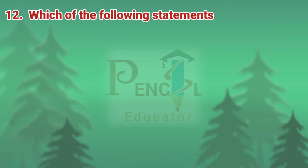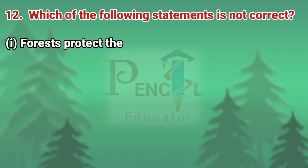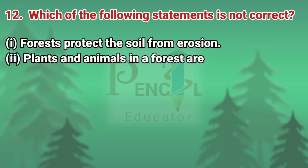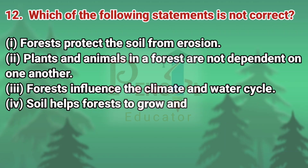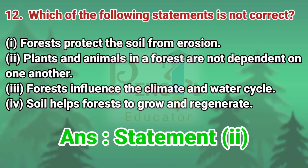Twelfth question: Which of the following statements is not correct? Forests protect the soil from erosion. Plants and animals in a forest are not dependent on one another. Forests influence the climate and water cycle. Soil helps forests to grow and regenerate. The correct answer is the second statement.